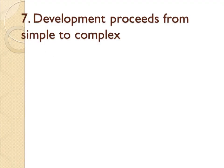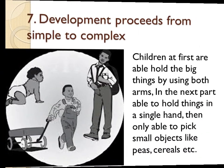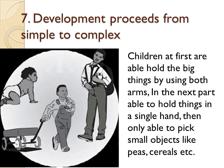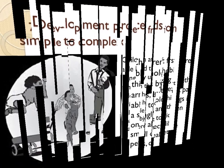The seventh principle is that development proceeds from simple to complex. Children at first are able to hold big things by using both arms. In the next stage, they are able to hold things in a single hand. Then they are only able to pick up small objects like peas, cereals, etc.